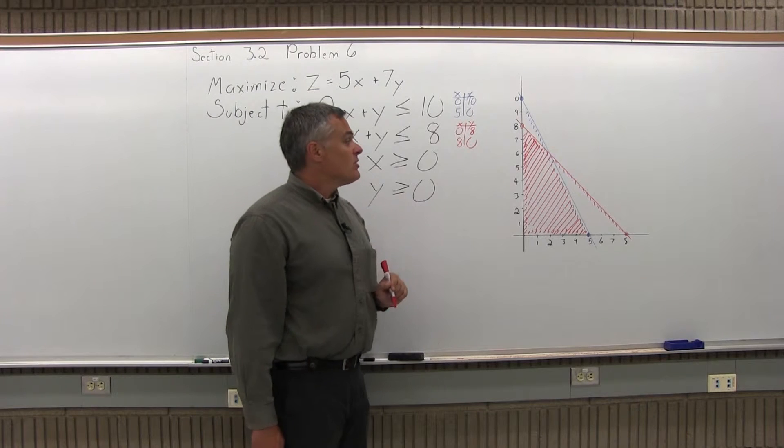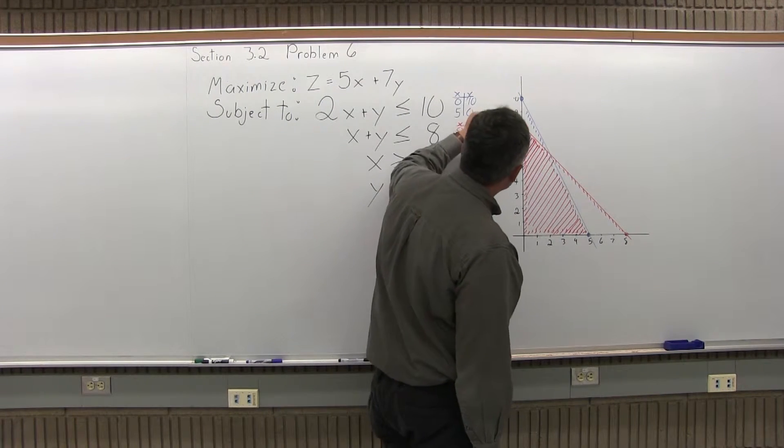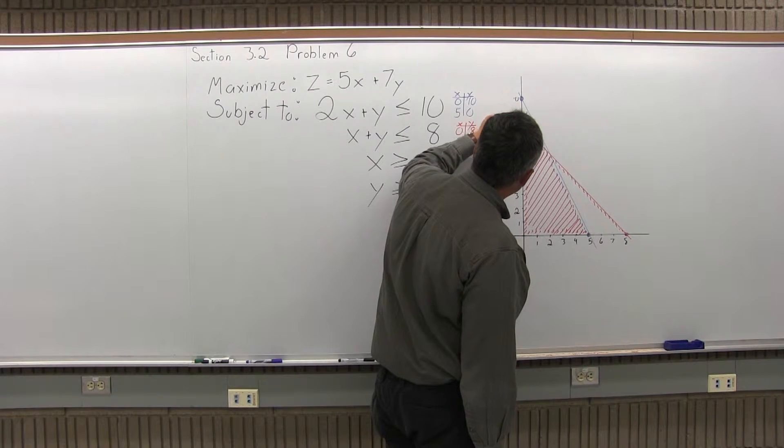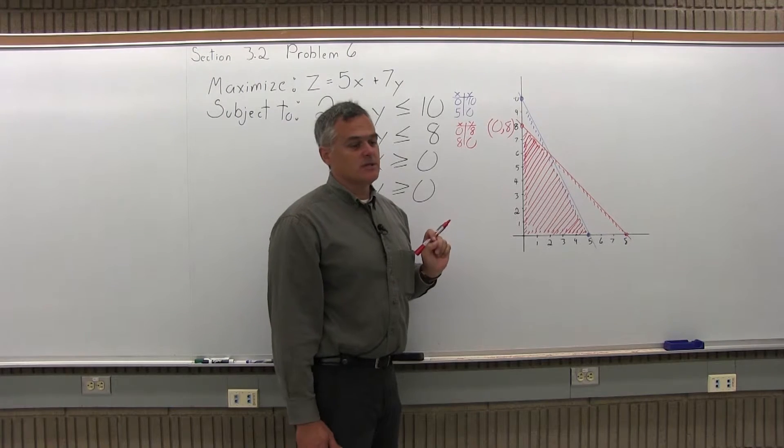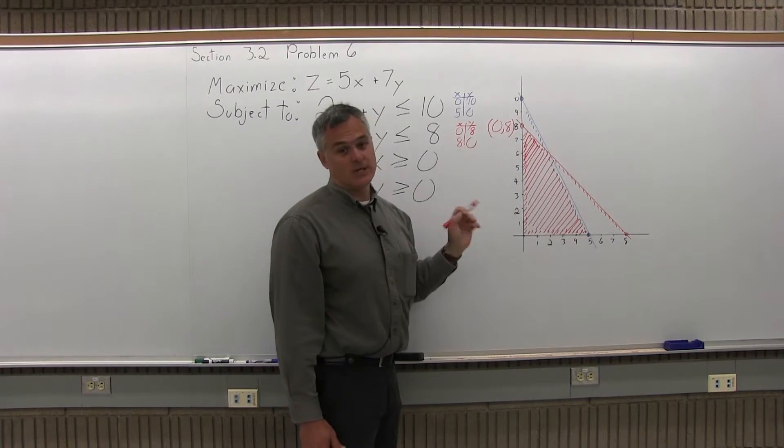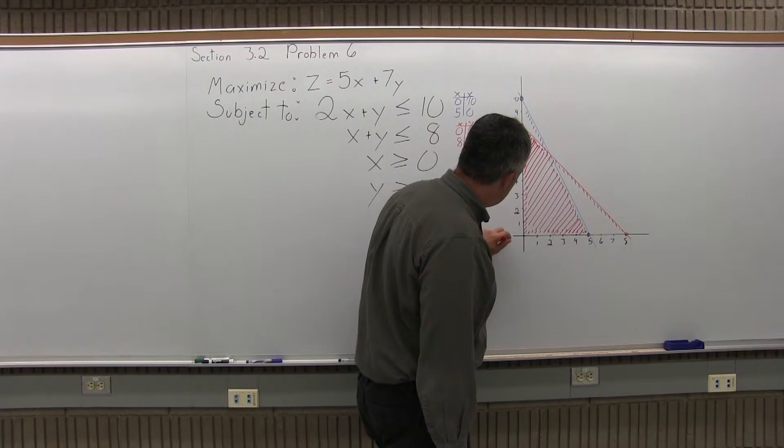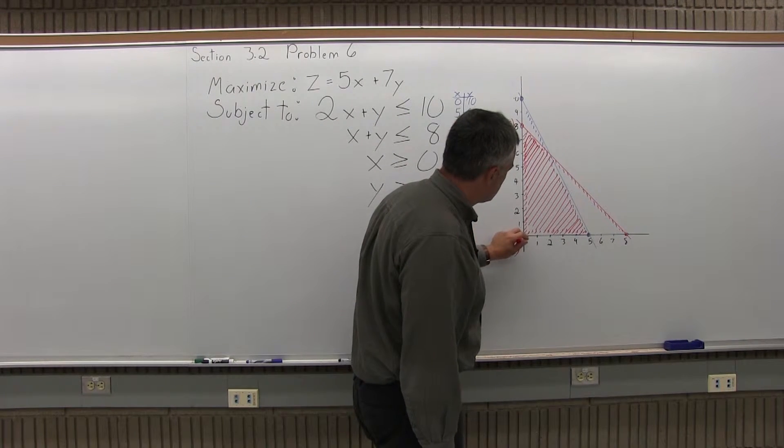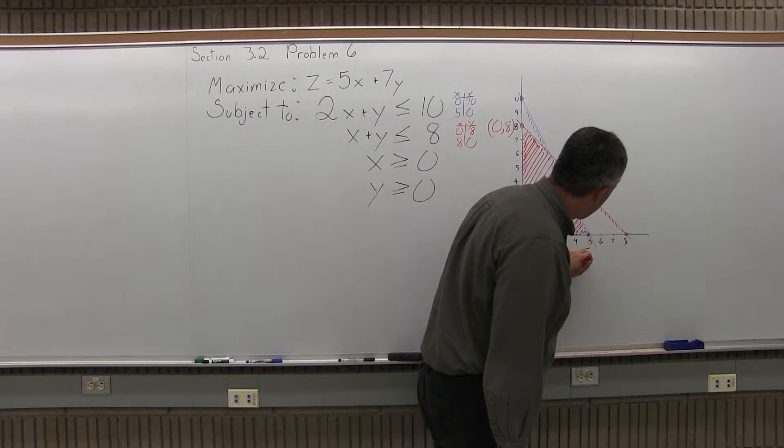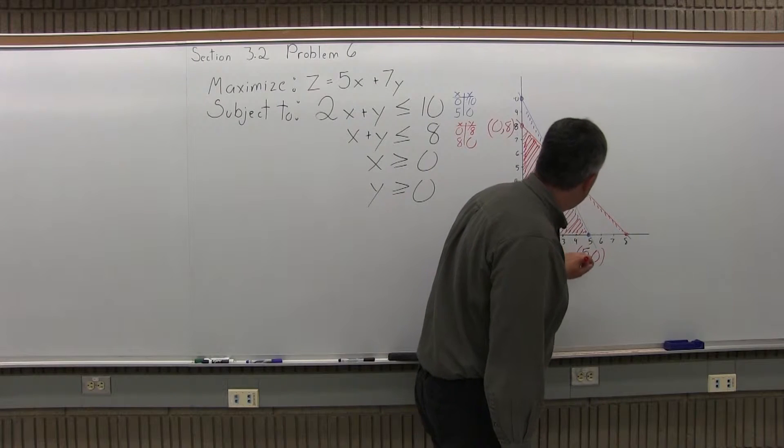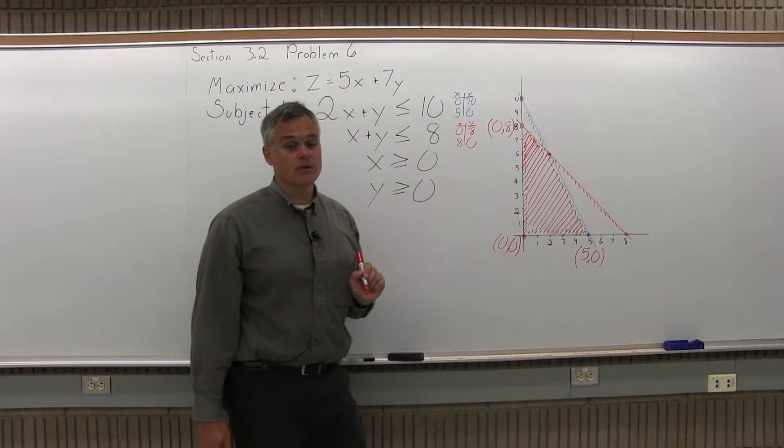Step two, label the corner points. Again, the majority of them are easy. 0, 8 is a corner point. Again, 0, 10 is not because it doesn't touch my feasible region. 0, 8 is a corner point, it's on the edge of the feasible region. 0, 0 is a corner point. It's not going to be the maximum, but it is a corner point. 5, 0 is a corner point. And the point of intersection between the blue line and the red line is also a corner point.